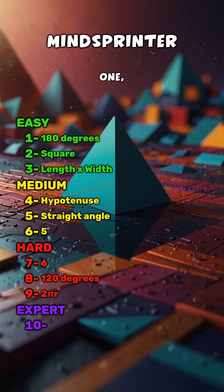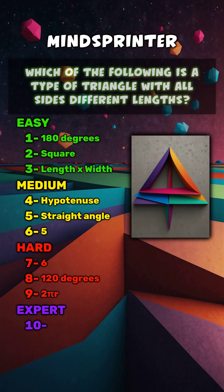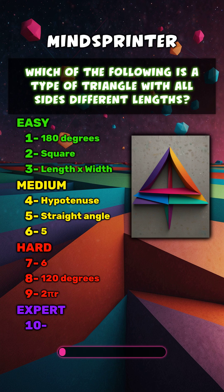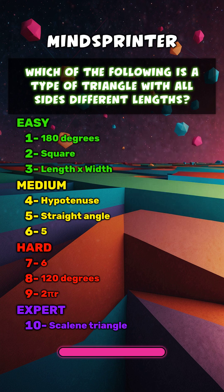Last one, but don't forget to subscribe and comment your score. Which of the following is a type of triangle with all sides different lengths? Scalene triangle.